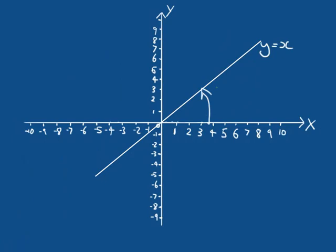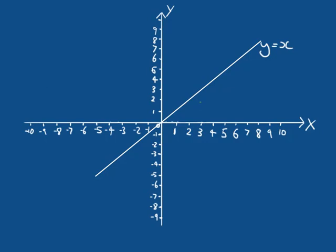We saw the reason this angle is currently 45 degrees is because of the relationship between how far we travel in X and how far we travel in Y. On the line Y equals X, if we travel one unit in X, we travel up one unit in Y — that's the same anywhere on the line. This relationship — for every single unit we move in X, we move up one unit in Y — is defining that angle.